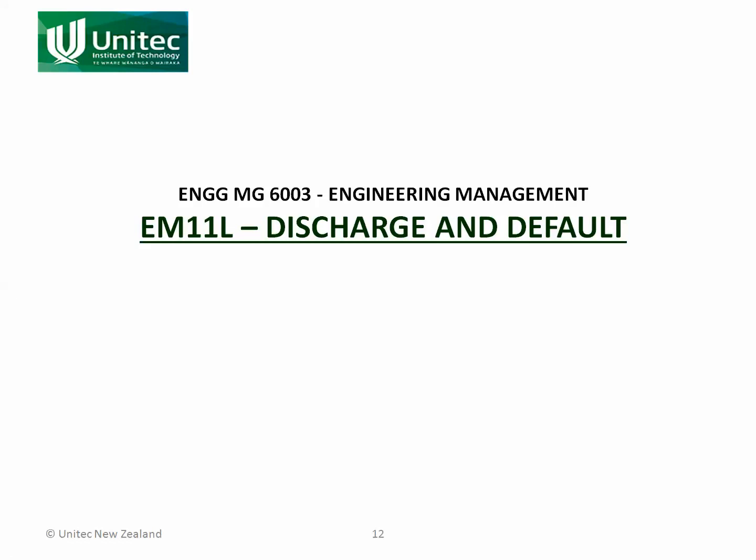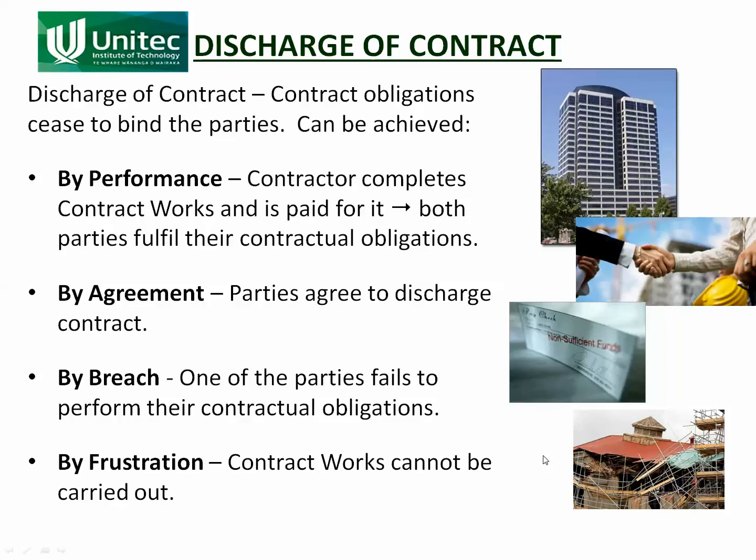In this slidecast we're going to look at discharge and default. These are both covered by section 14 of NZS 3910 and they are slightly related. Discharge of contract is how the contract is finished. It starts when there is an acceptance of the offer made by the contractor, and when it finishes that's what's called the discharge of the contract.